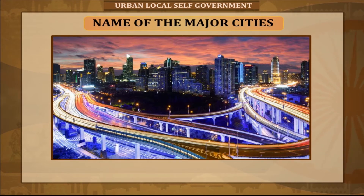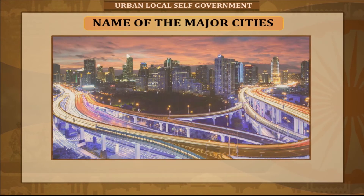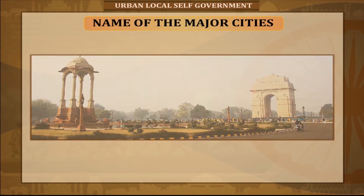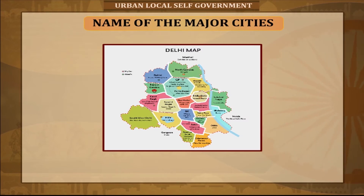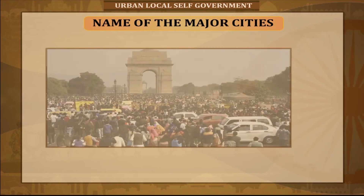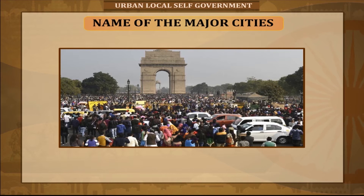A mega city is defined as having a population of more than 40 lakhs (4 million and above). Delhi, officially the National Capital Territory of Delhi (NCT), is a city and a union territory of India. It is bordered by Haryana on three sides and by Uttar Pradesh to the east. It is the most expensive city in India, covering about 1,484 square kilometers, with a population of about 25 million.